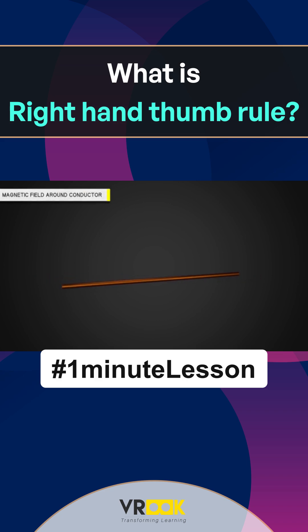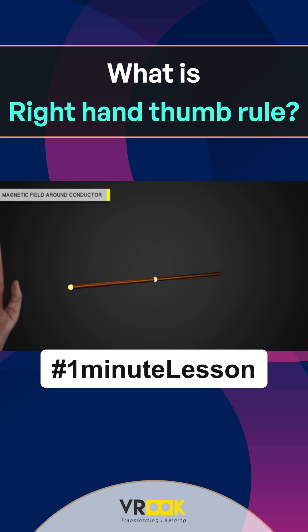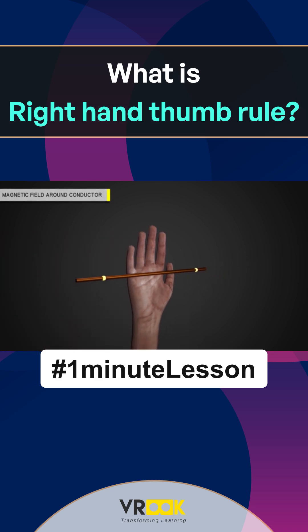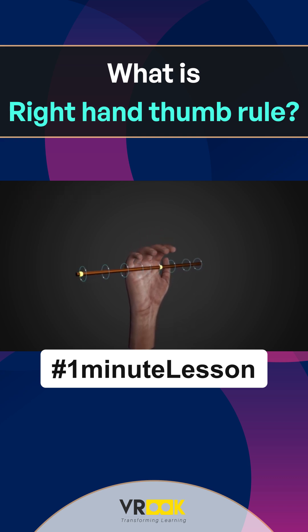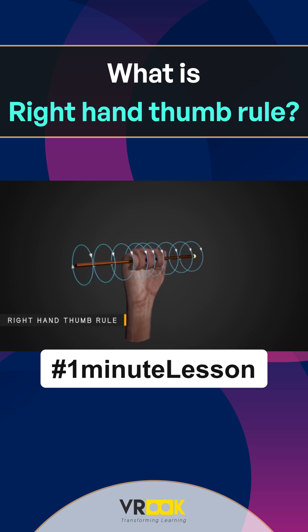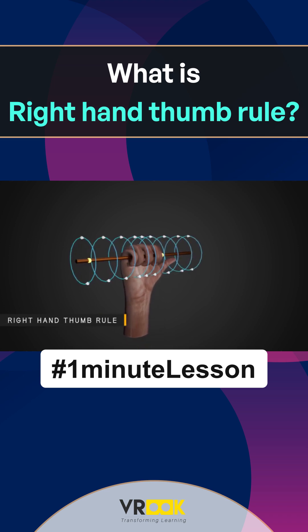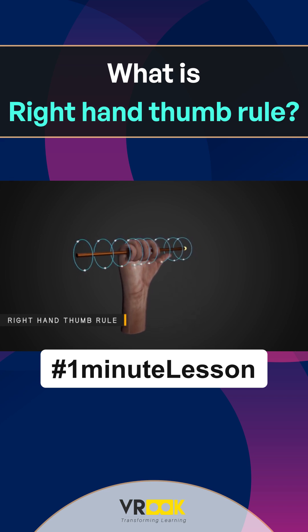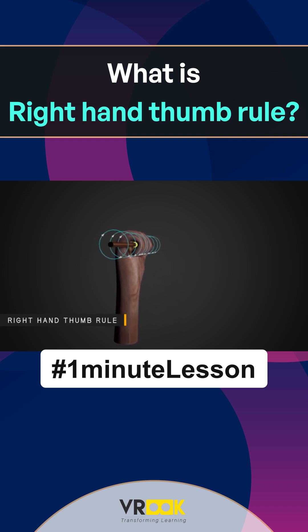Consider a wire or a conductor through which a steady DC current flows. A magnetic field will be set up around it. To know the direction of this magnetic field, we use the right hand thumb rule. It says hold the wire carrying current in your right hand such that the thumb of your right hand points the direction of the current. Then close your fingers in a natural way. The direction of curl of the fingers gives the direction of the magnetic field.